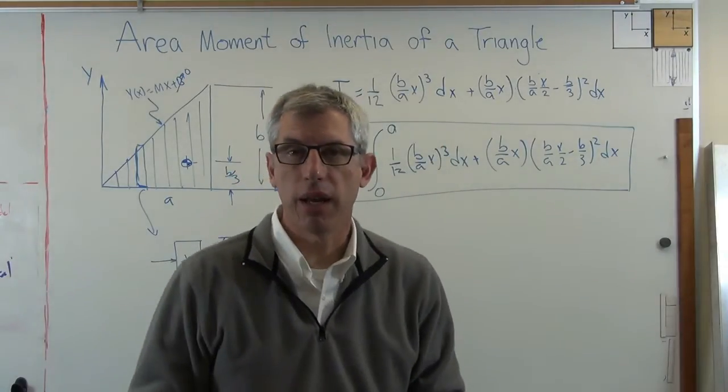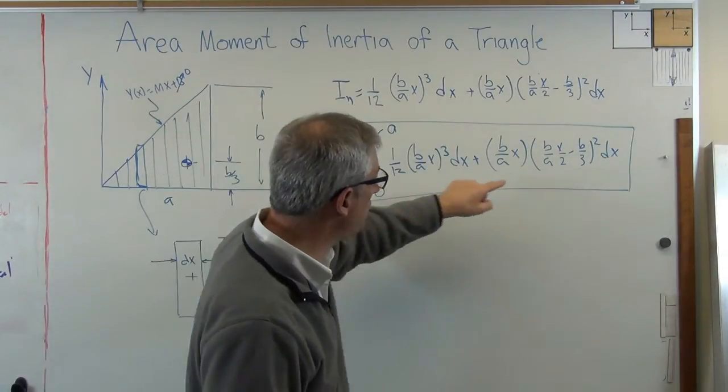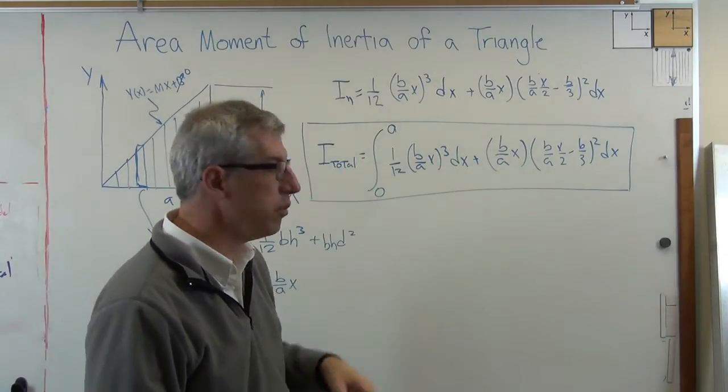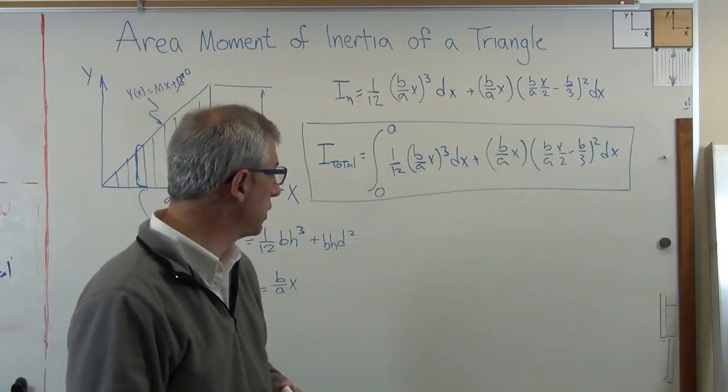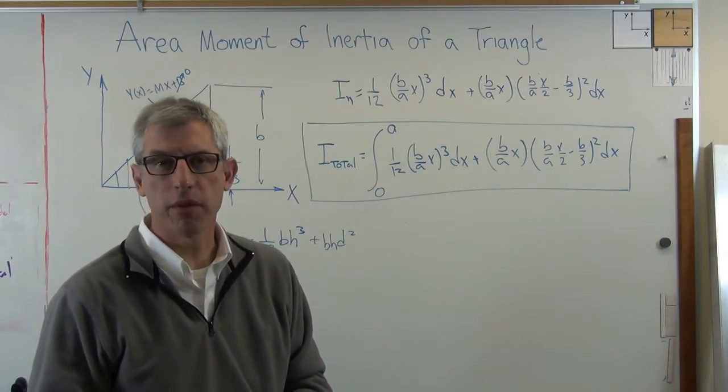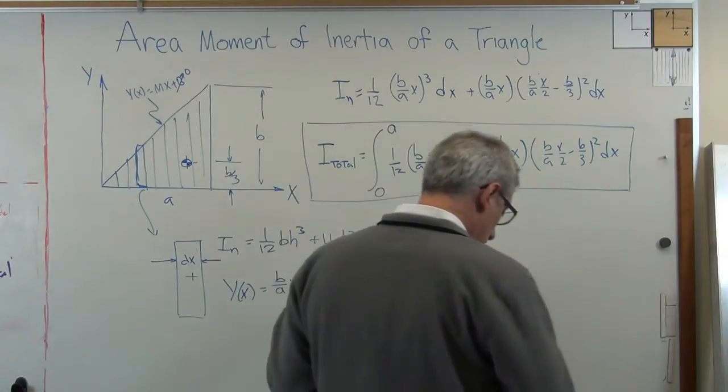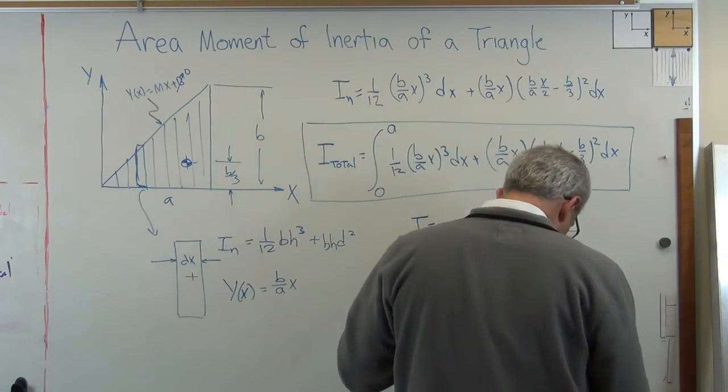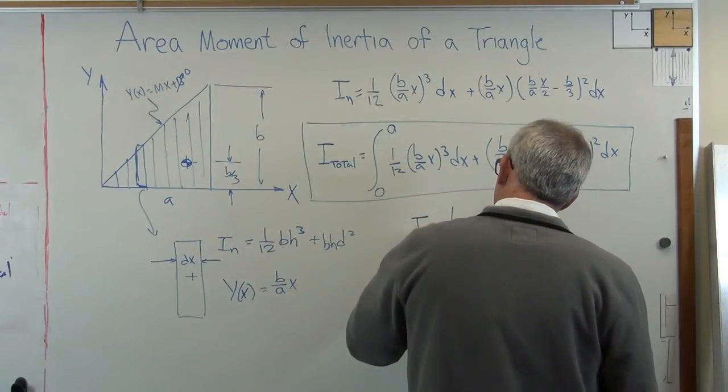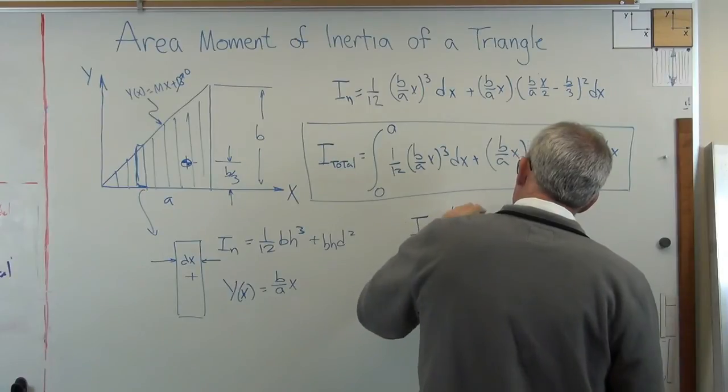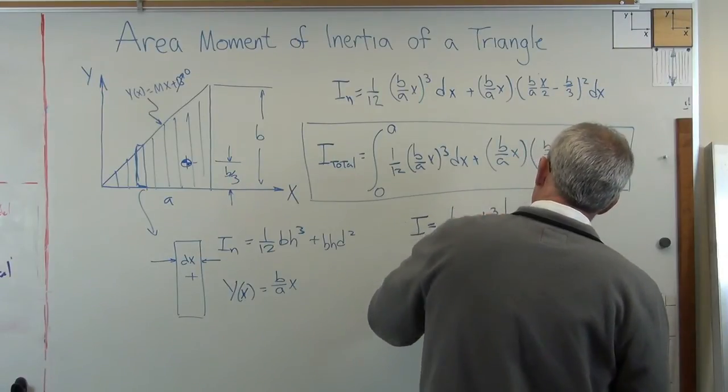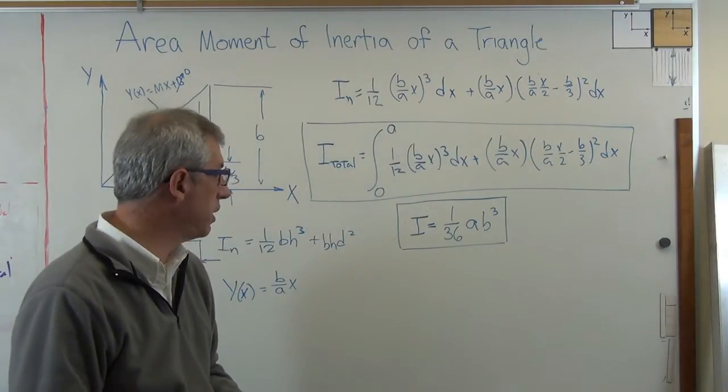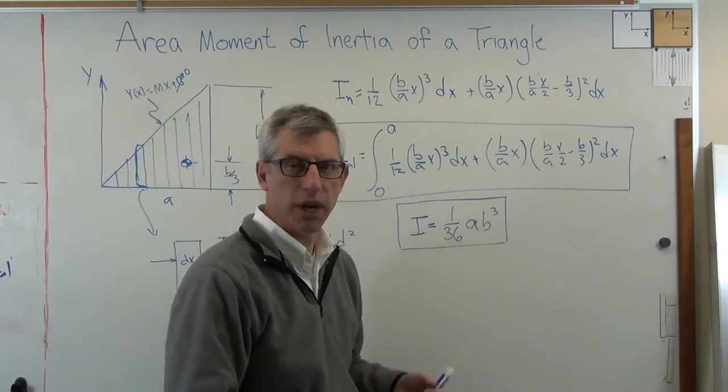Evaluate that, and you're going to get the area moment of inertia of a triangle. That looks pretty gnarly, but it's not really. This is just a polynomial in x cubed. You can work this out by hand or put it in MATLAB or Mathematica. And when you go through this, you find out that complicated looking expression comes out to be I equals 1 over 36 ab cubed, or 1 over 36 base times height cubed.